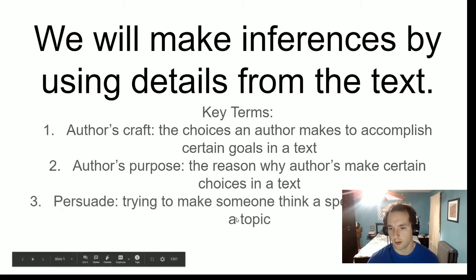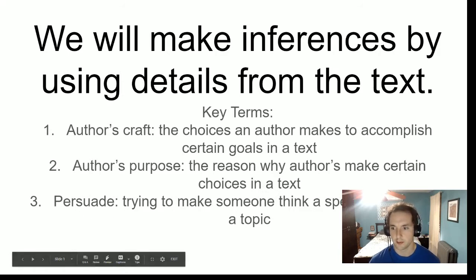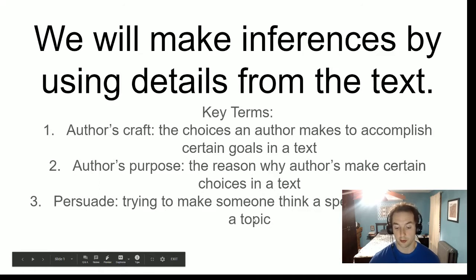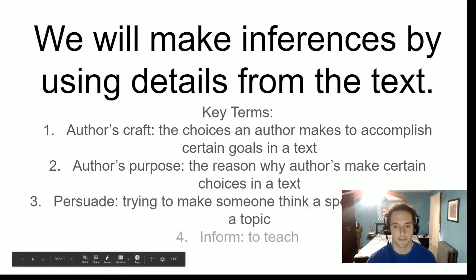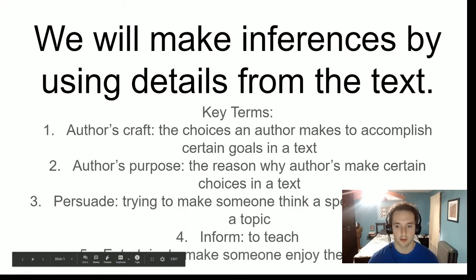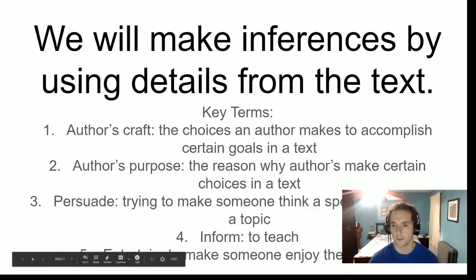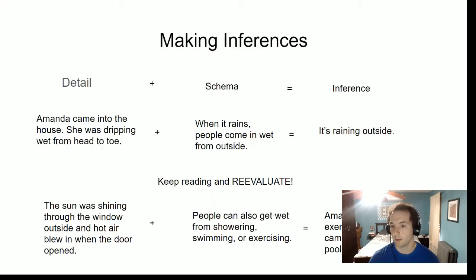When thinking about author's purpose, there are three main reasons why authors write books and make choices inside them. A way to remember it is PIE. One is persuade — trying to make someone think a specific way about a topic. Inform means to teach. And then entertain is to try to make someone enjoy themselves. If you notice, I underlined the P, I, and E because author's purpose spells PIE. Those are the three main reasons why authors do anything they do in the book or why they're writing a book in general.